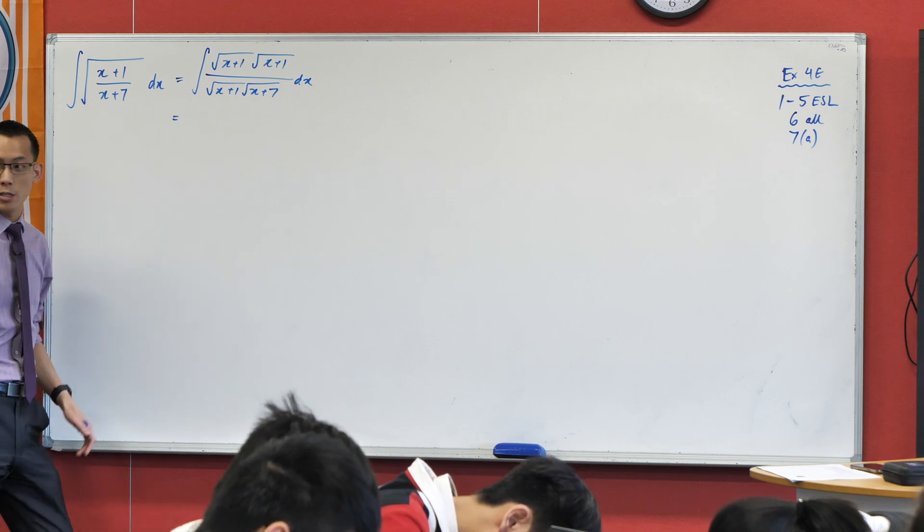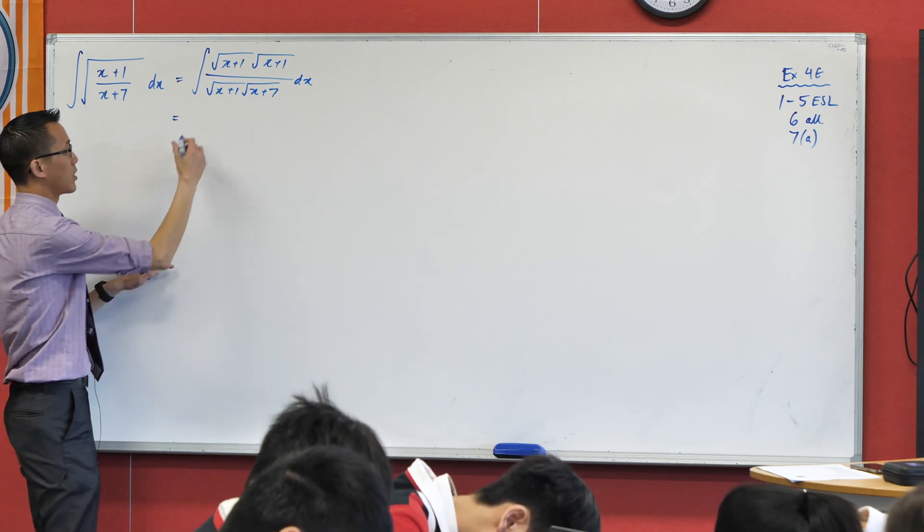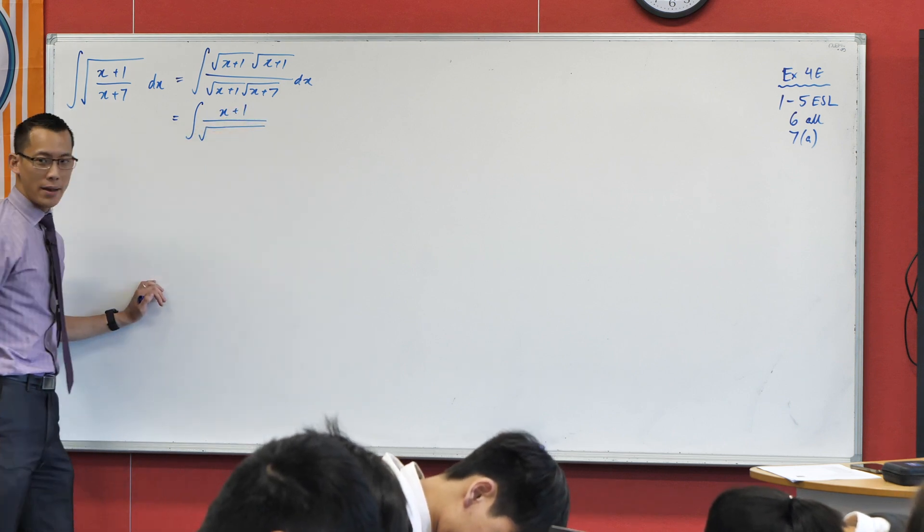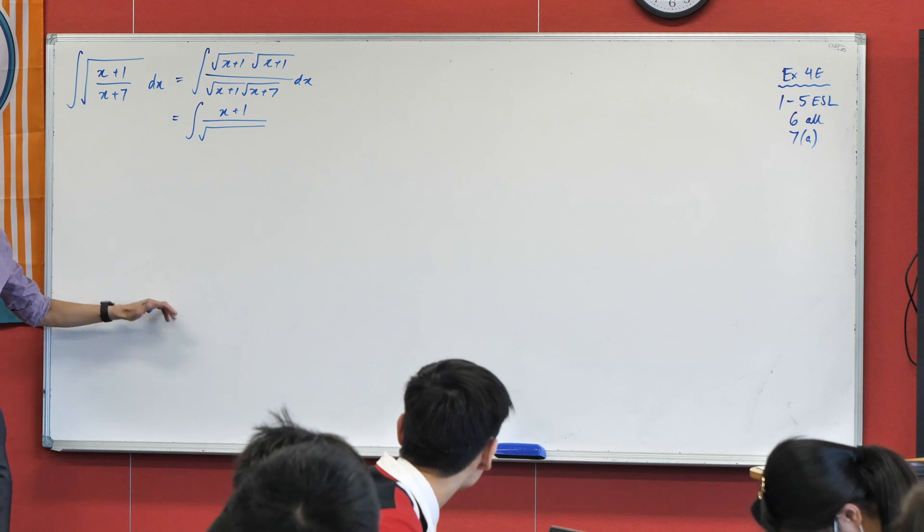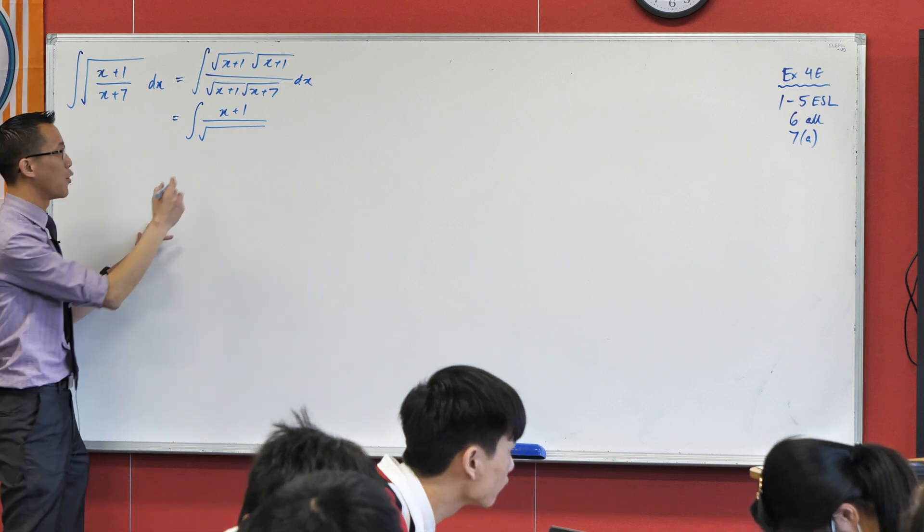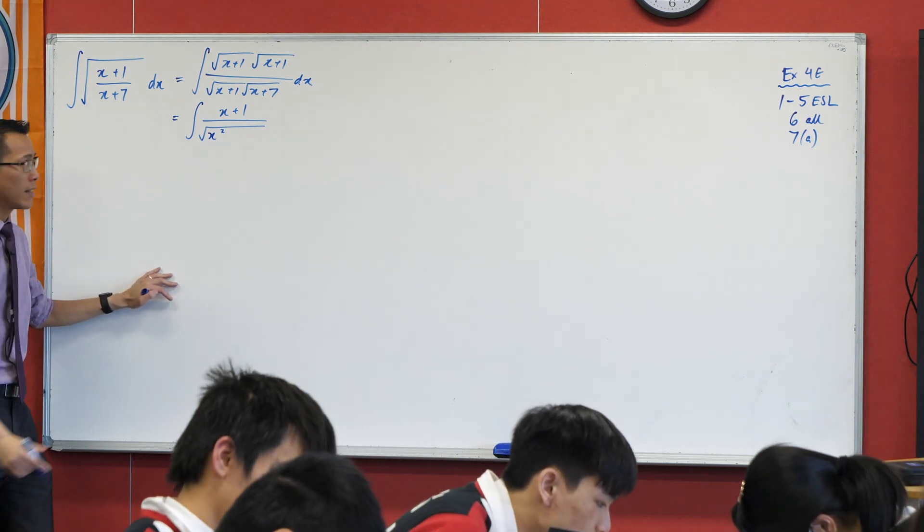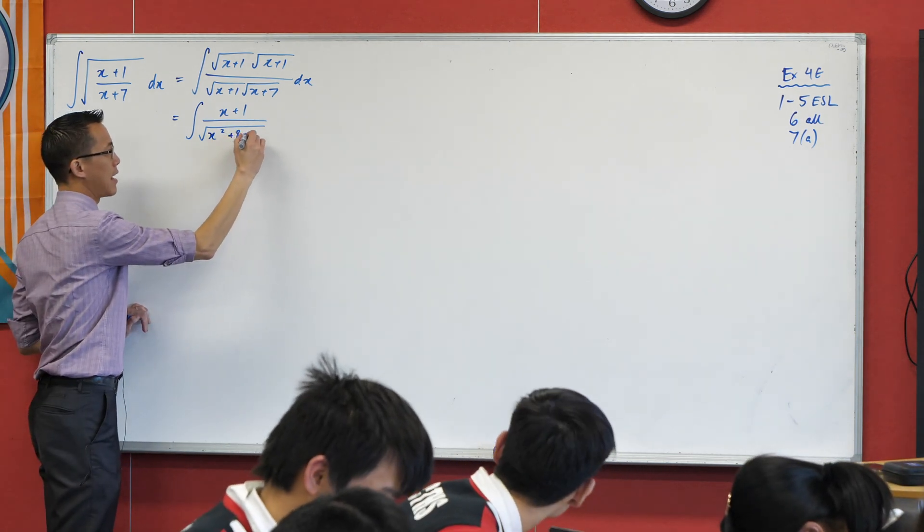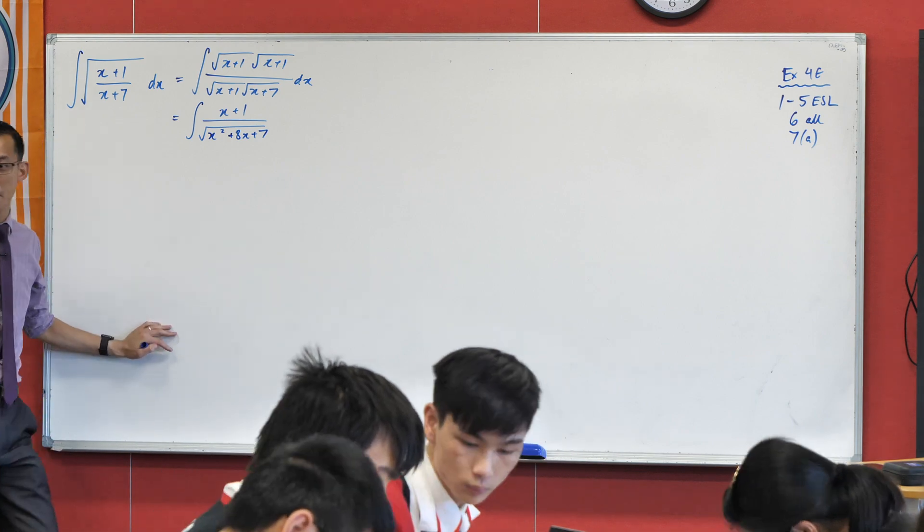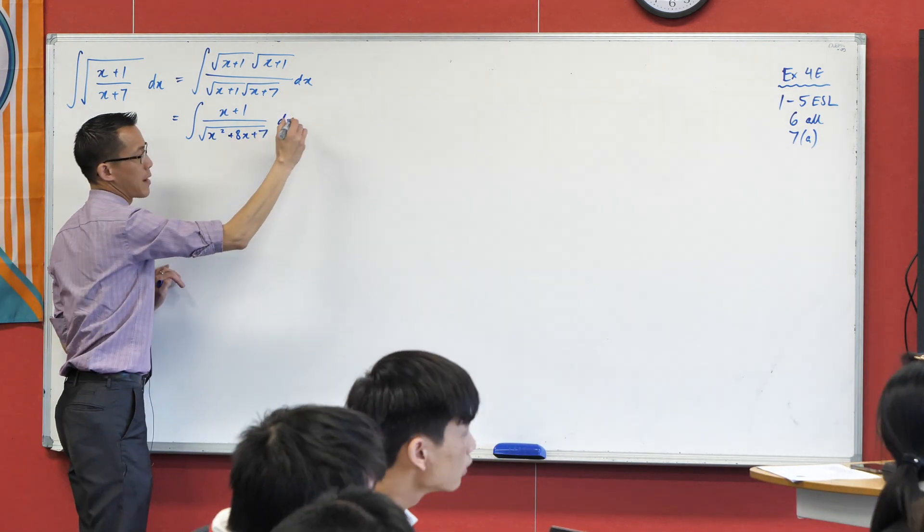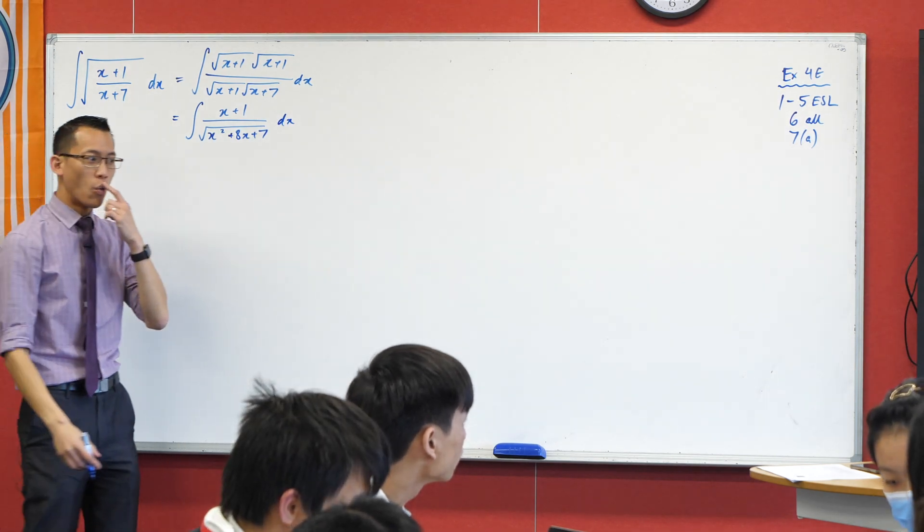Now the whole reason for this is because now my numerator is going to be rational and my denominator is going to be the square root of a quadratic. Now even though that's messier than what I had before I can deal with it. What do we got here? It adds to 8 and it multiplies to 7. That's my pair, my 1 and my 7.